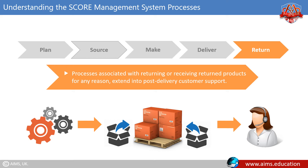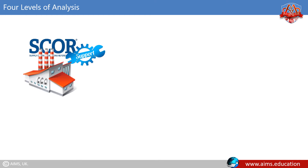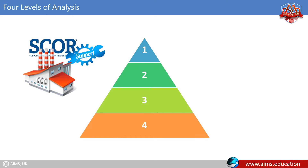The SCOR model supports supply chains of various complexities and across multiple industries. A pyramid of four levels represents the path a company takes to improve its supply chain. Level one is the top level and includes the process types. Level two is the configuration level, where each process is broken down into process categories.